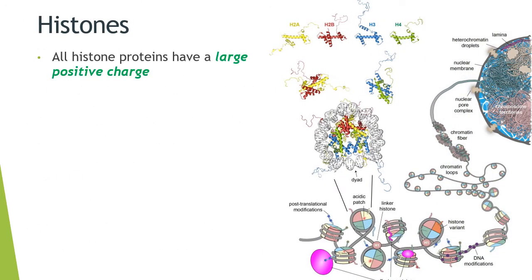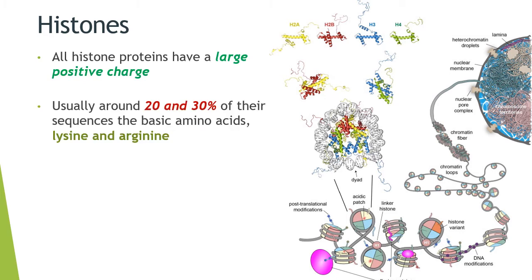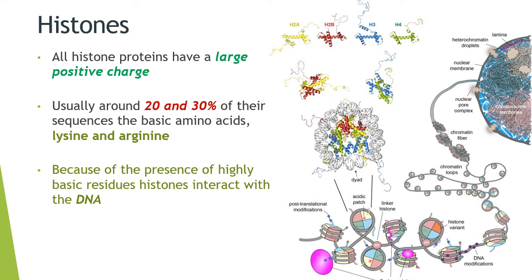These histones usually have a large positive charge because of the presence of basic amino acids, lysine and arginine, which constitute about 20 to 30 percent in each of them. This positive charge helps these histones to interact with the DNA, which is itself a negatively charged molecule. Opposites attract here and help in packaging the DNA around these histone proteins.